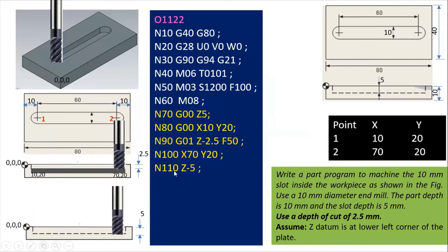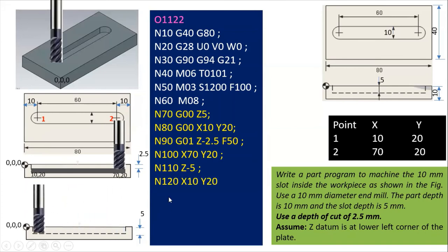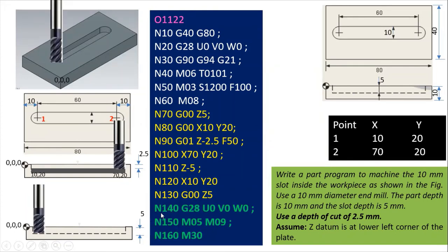Z minus 5 is used because, as we know, from the datum surface when the tool moves below, we consider minus values. The tool then has to return — it goes back from point two to point one, so I give the coordinates X10, Y20 again. Once this operation is complete and the slot depth is achieved, block G00 Z5 is given to retract the tool upward to a safe position.